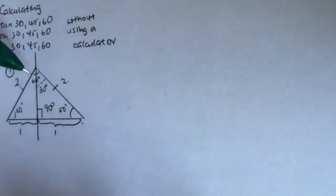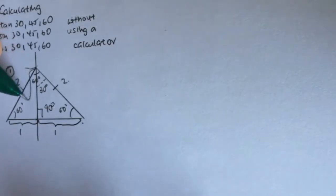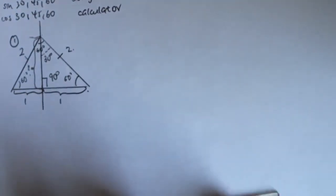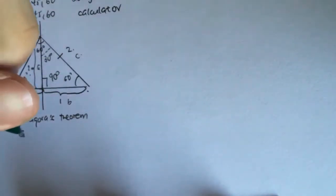Next, we need to calculate the unknown length — the height of the triangle — marked with a question mark. To calculate this distance, we will use the Pythagorean theorem. For a right triangle with sides a, b, and hypotenuse c, the theorem tells us that a squared plus b squared equals c squared.